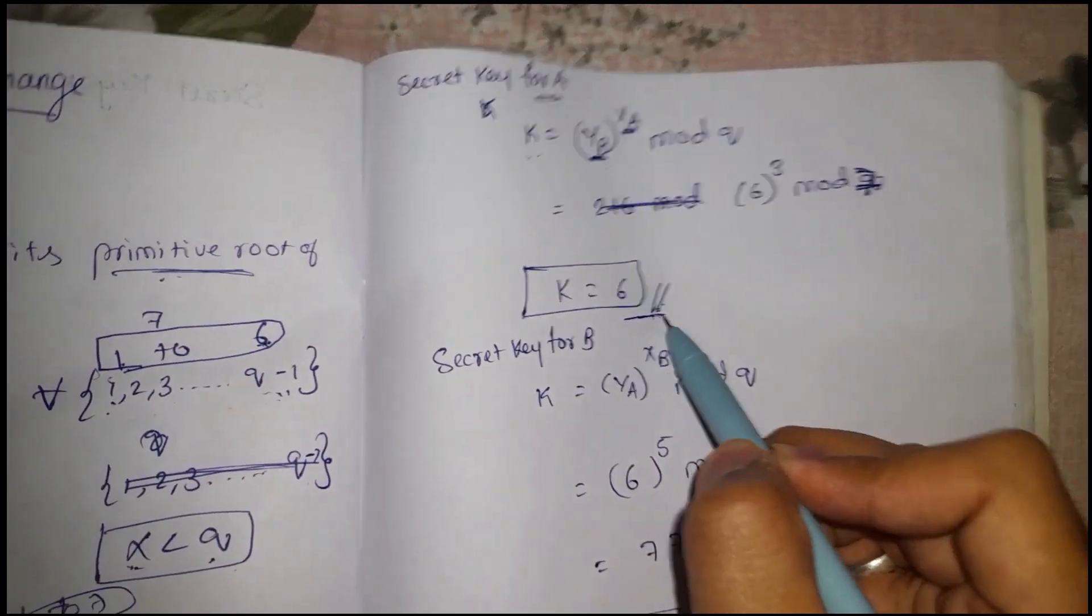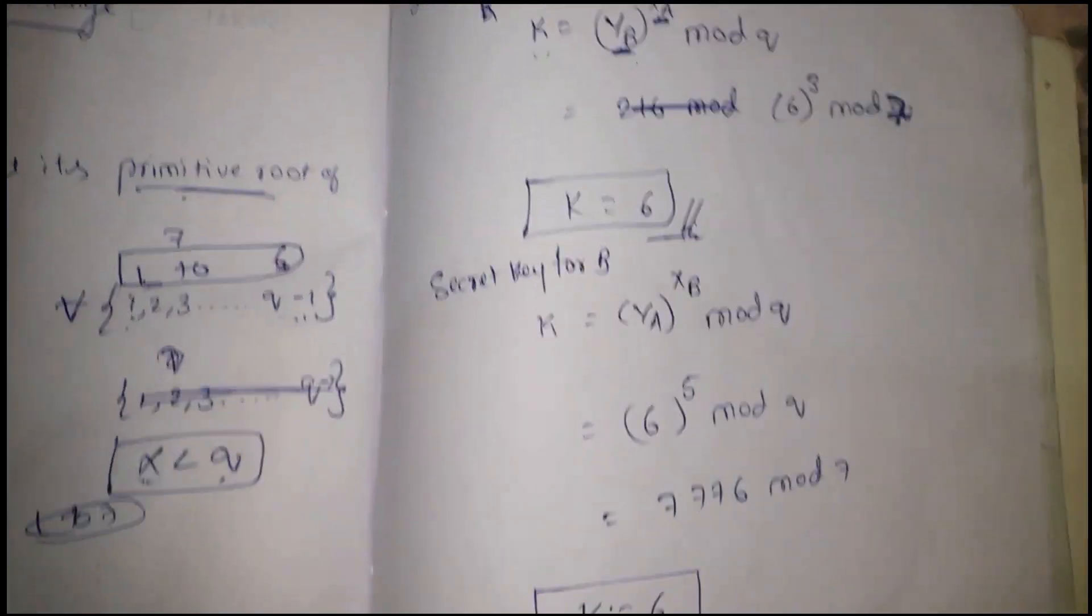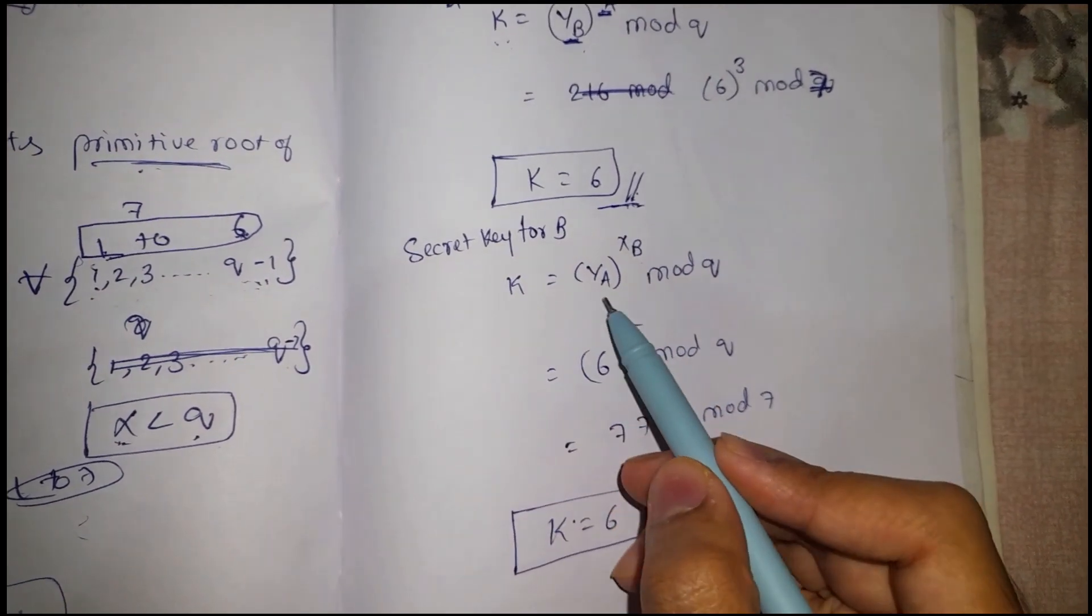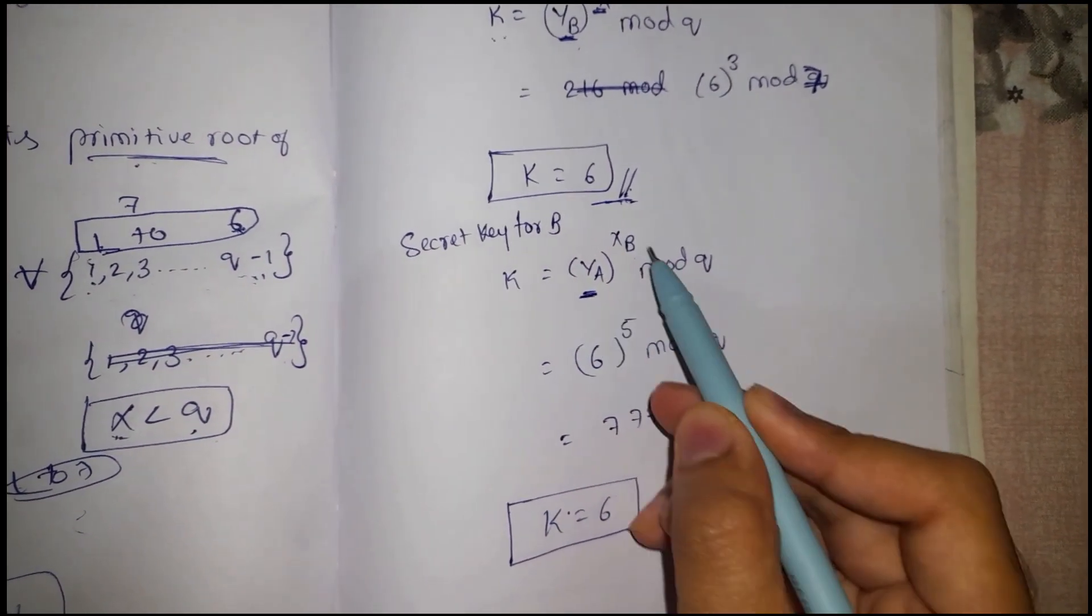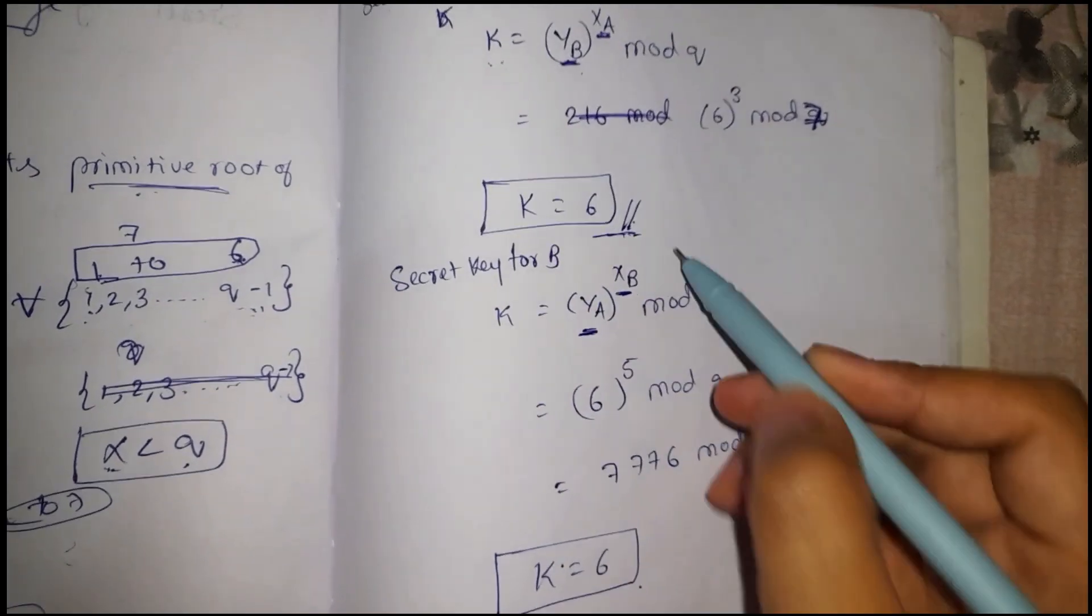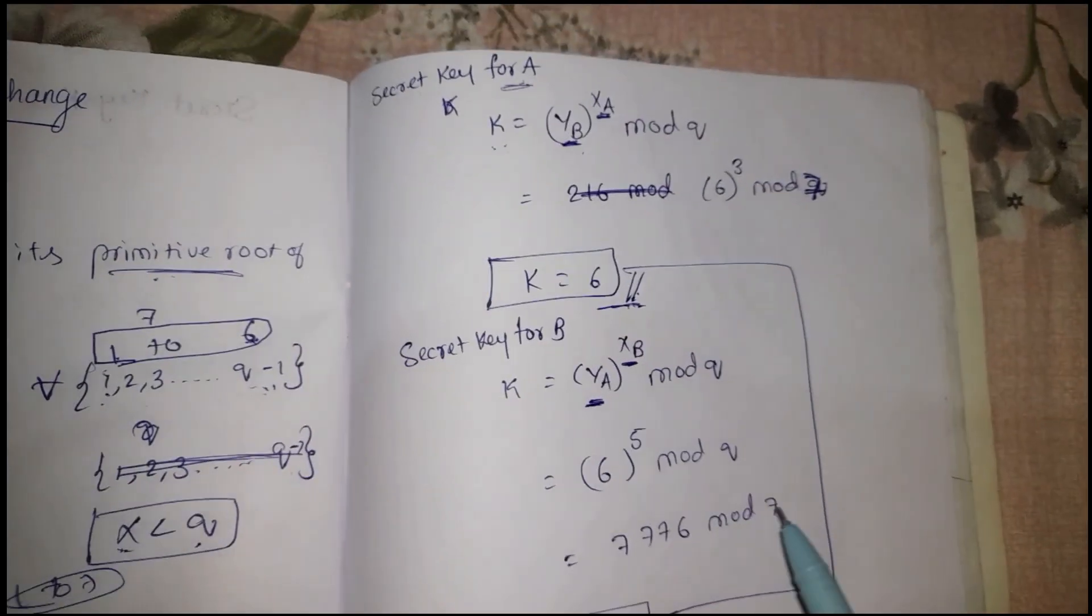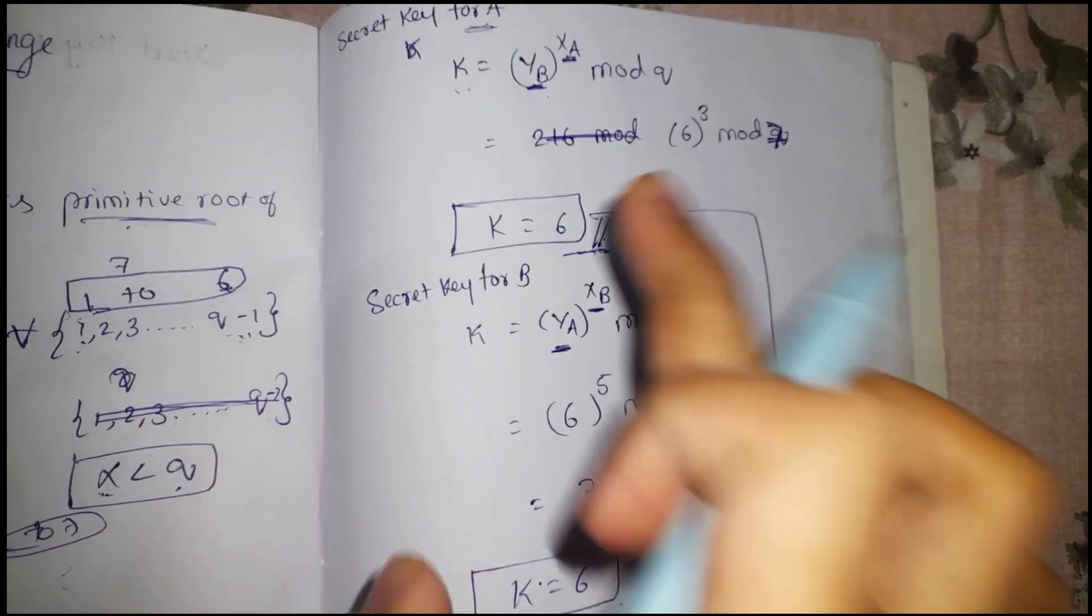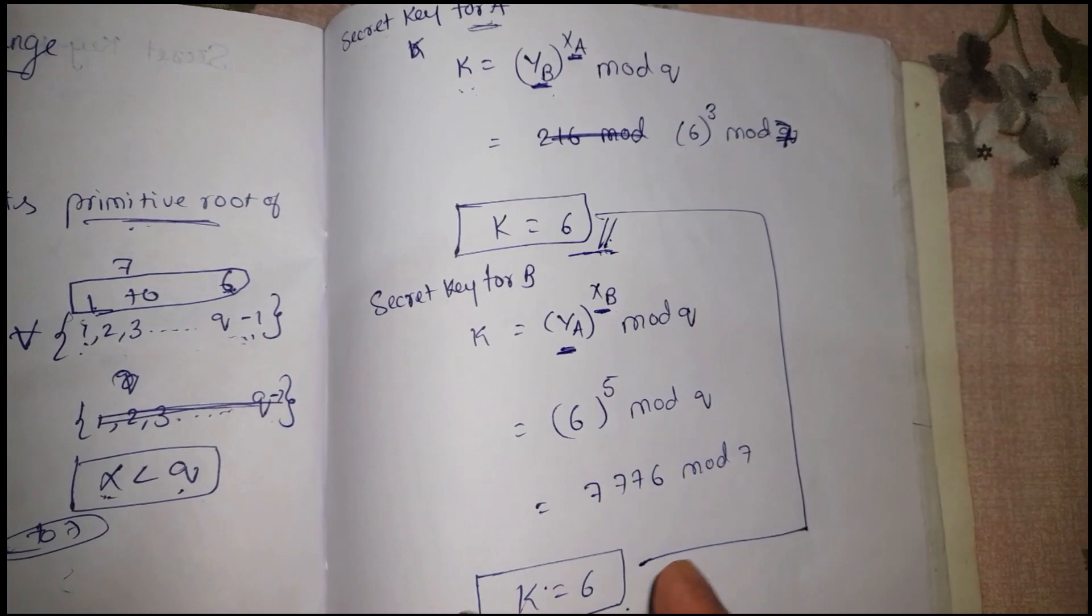If B wants to obtain the secret key, it will use the public key of A and its own private key to obtain the secret key. Both keys should be exactly same for both A and B. When both keys are same, then only you can say that this algorithm is correct, which means that we have performed the right steps.